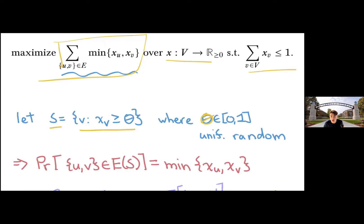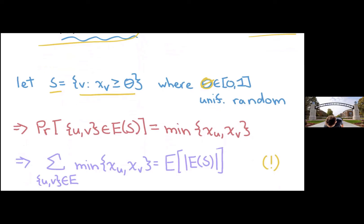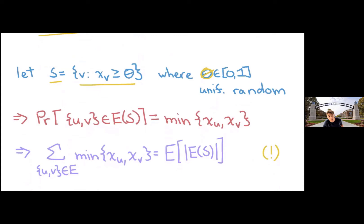I should have mentioned that first LP was given by Moses. So the min of X_u and X_v can be seen as the probability of preserving this edge. So the sum of mins is really the expected number of edges in the set, in the subgraph induced by S.